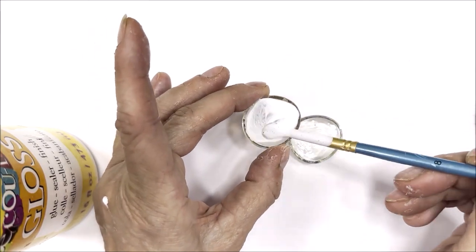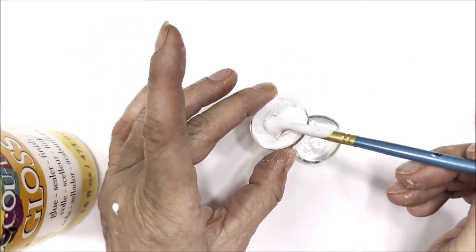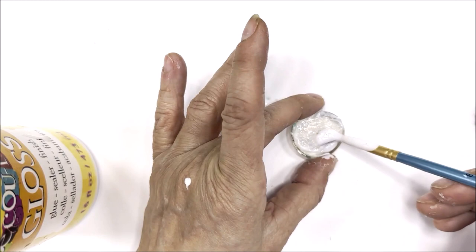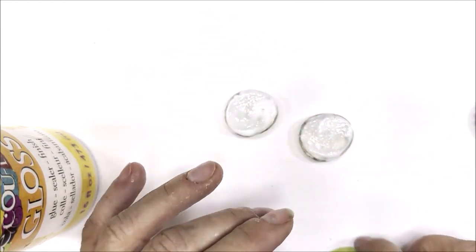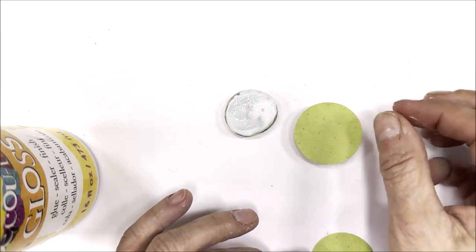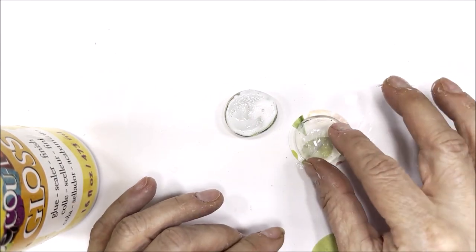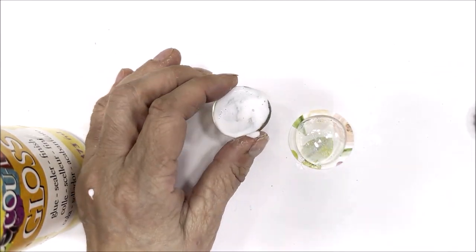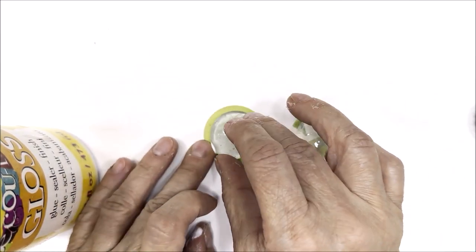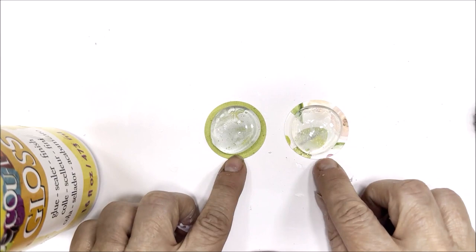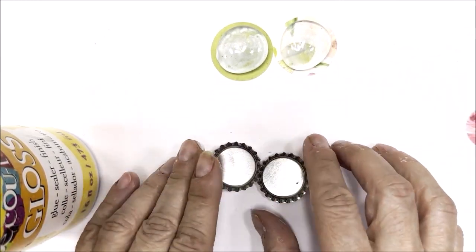We're going to put some of the decoupage medium on the back of our marbles. This is going to act like glue. You can also use regular glue if you desire to do so. You can use whichever side of the patterned paper that you'd like for these. We're going to scoot those up and work on the smaller bottle caps.